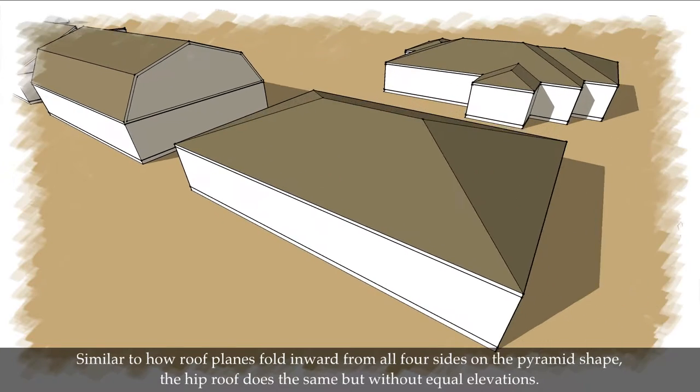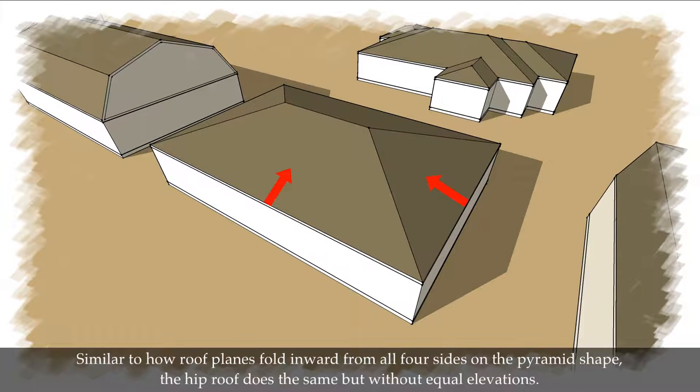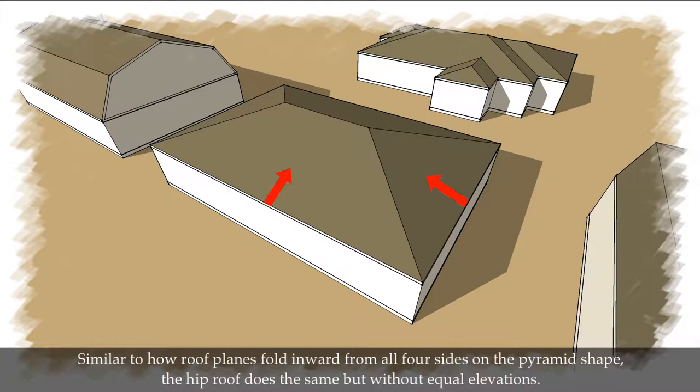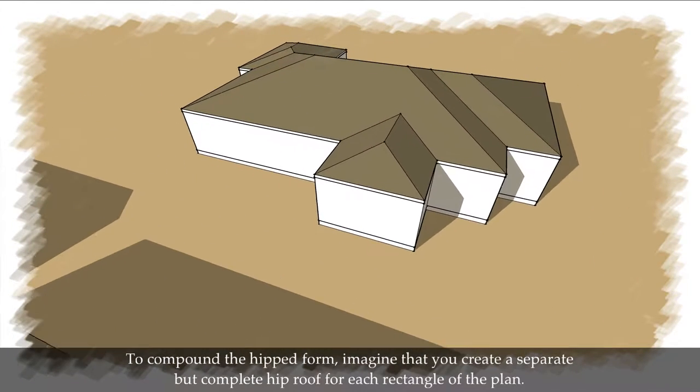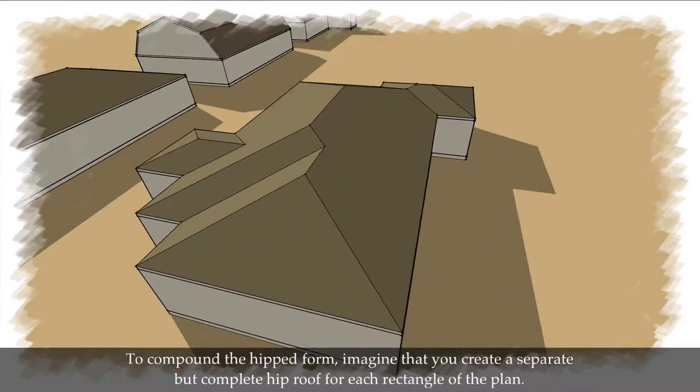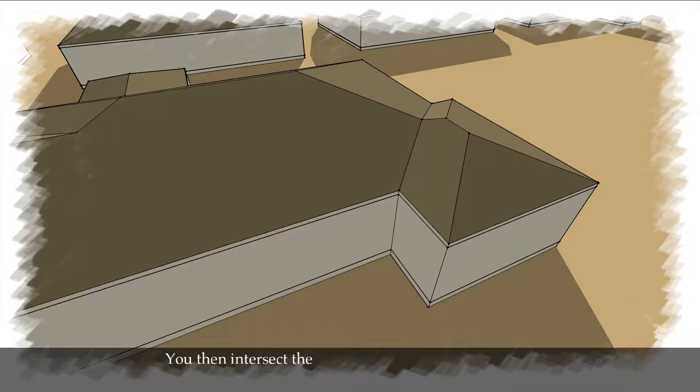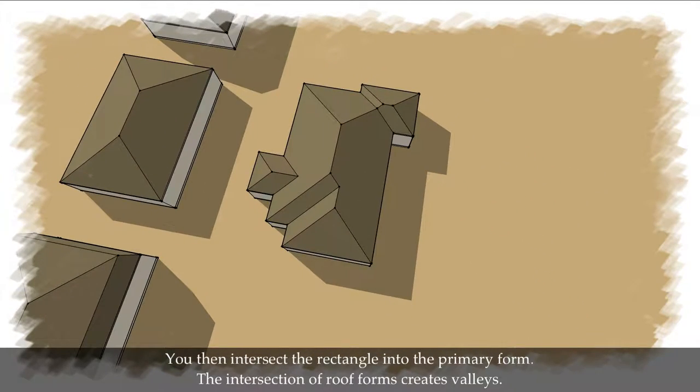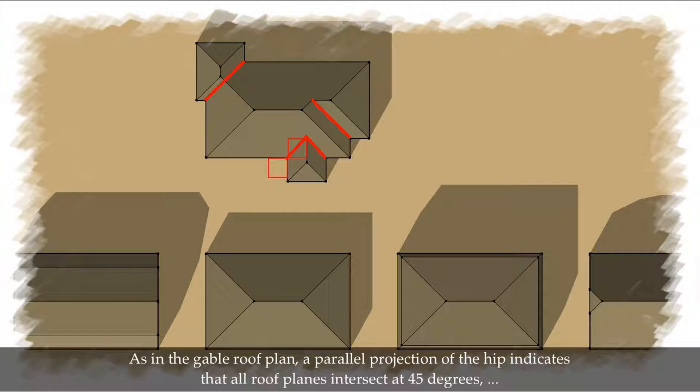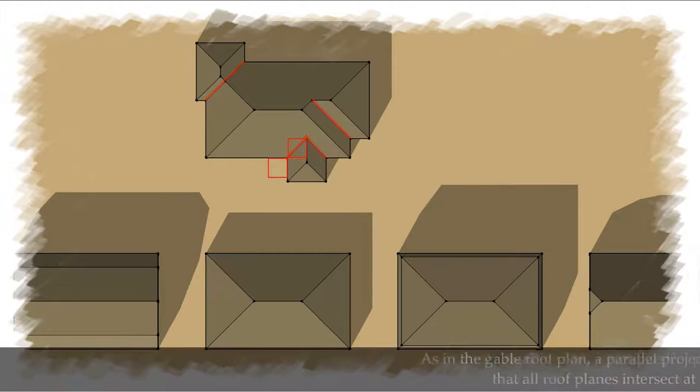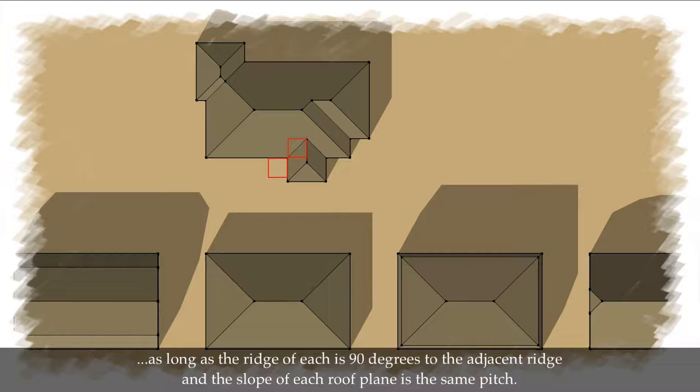Similar to how roof planes fold inward from all four sides on the pyramid shape, the hip roof does the same, but without equal elevations. The hip roof eliminates the gable face, but requires more fascias, eaves, and gutters. To compound the hip form, imagine that you create a separate but complete hip roof for each rectangle of the plan. You then intersect the rectangle into the primary form. The intersection of roof forms creates valleys. As in the gable roof plan, a parallel projection of the hip indicates that all roof planes intersect at 45 degrees, as long as the ridge of each is 90 degrees to the adjacent ridge, and the slope of each roof plane is the same pitch.